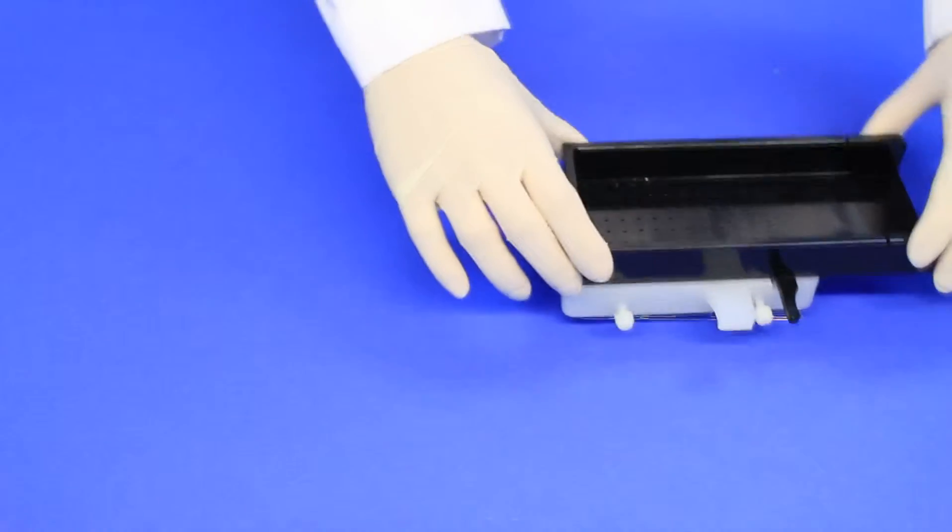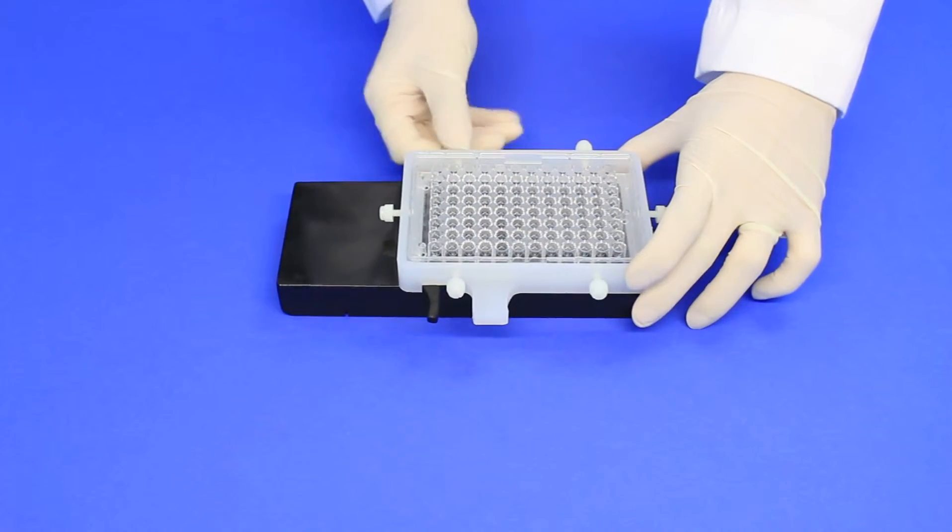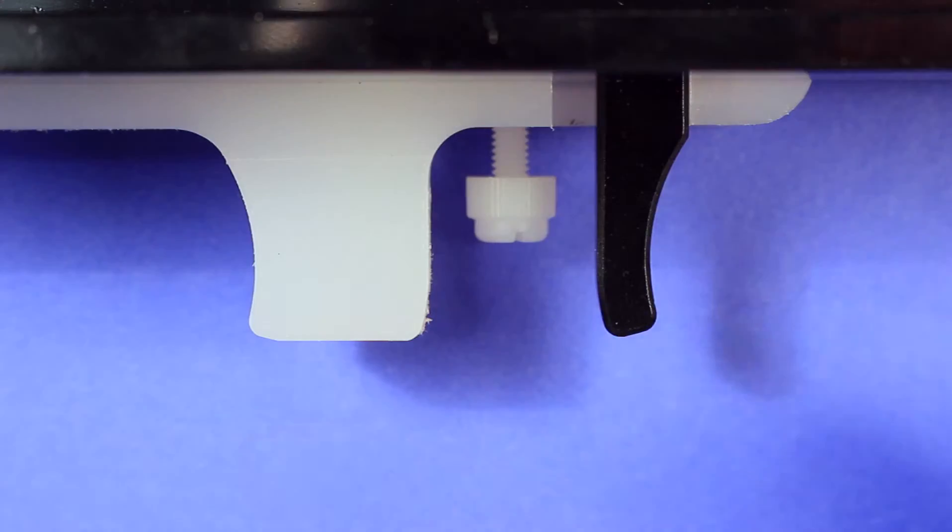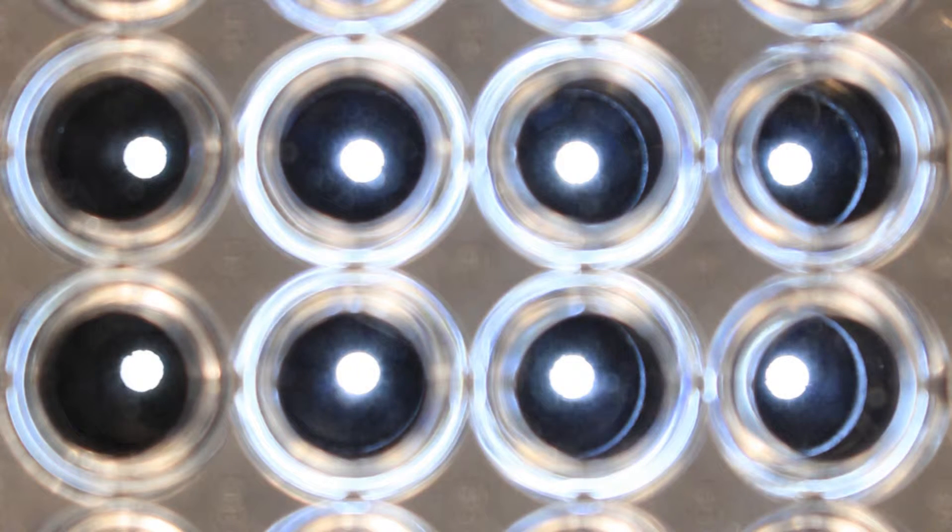If needed, register your microplate to the dispenser using the thumb screws on the dispenser. Hold down the release bar and make sure the holes are centered in each well of your microplate. Readjust if needed.